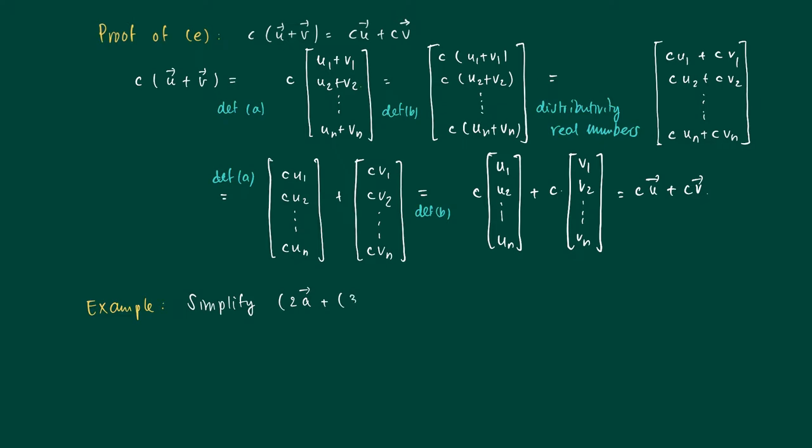The solution is as follows: 2a plus 3b minus 2a minus 4b.